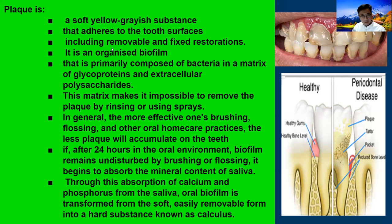It includes removable or fixed restorations — it could be on your denture, your filling, your crown, or bridge. It's an organized biofilm primarily composed of bacteria in a matrix of glycoprotein and extracellular polysaccharides — basically from carbohydrate substances like rice, noodles, and bread. Those are the types of carbohydrates that build up on your teeth, and that's called plaque.